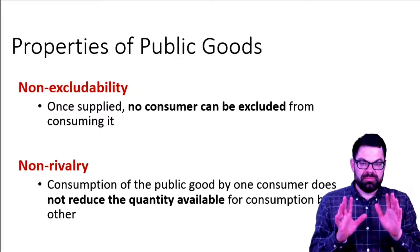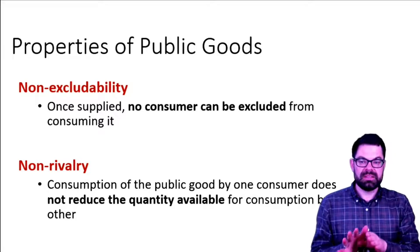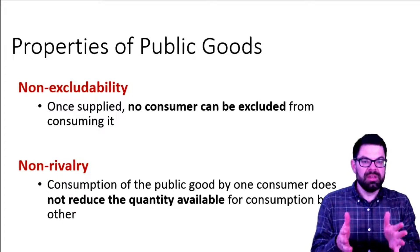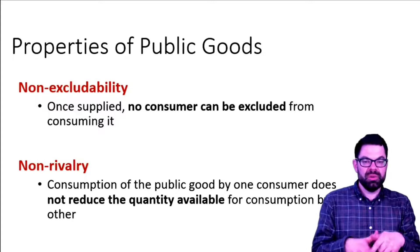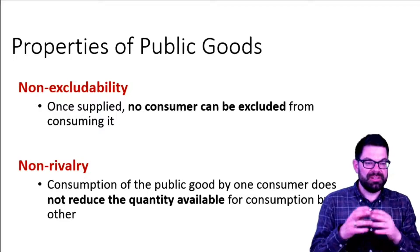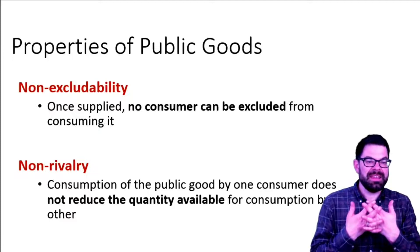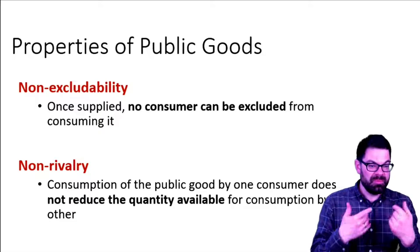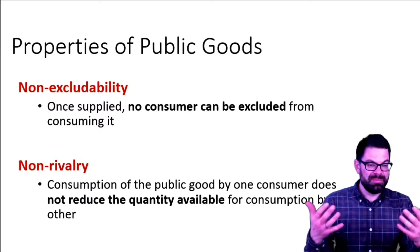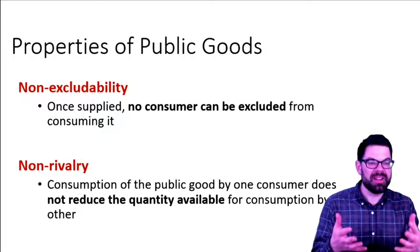Public goods are defined by two properties. The first is non-excludability: once a public good is supplied, no consumer can be excluded from consuming it. A simple example is a firework display — even though someone probably pays for it, it's almost impossible to exclude other people from watching it. So it's not excludable.